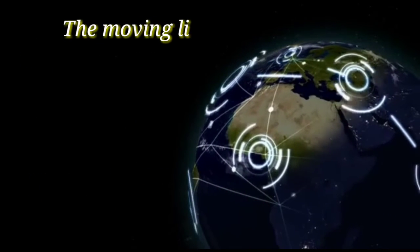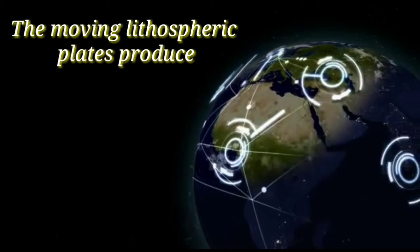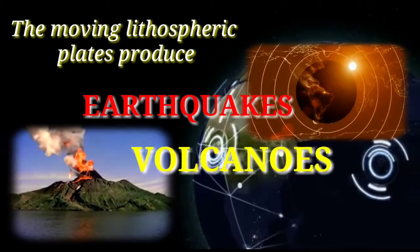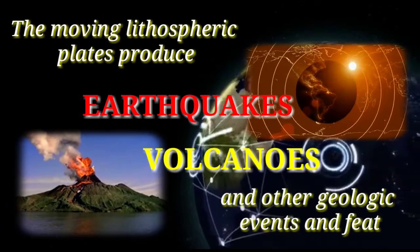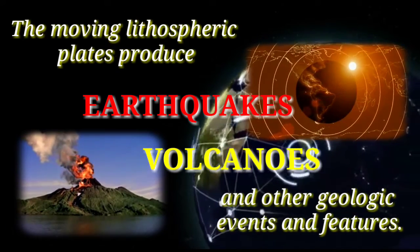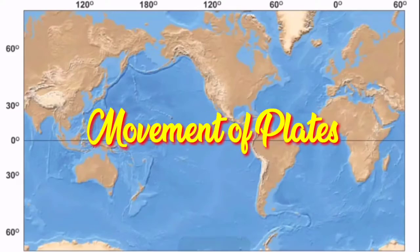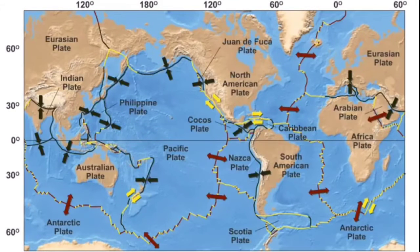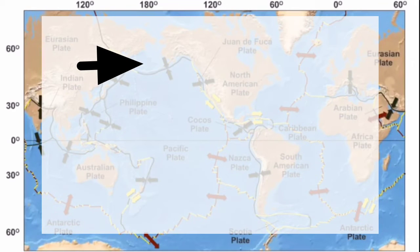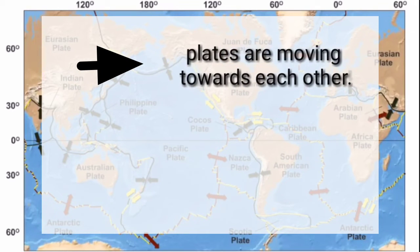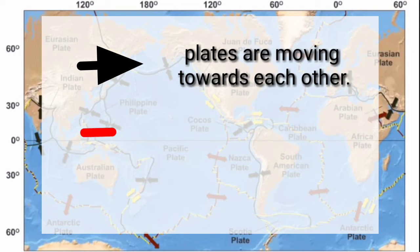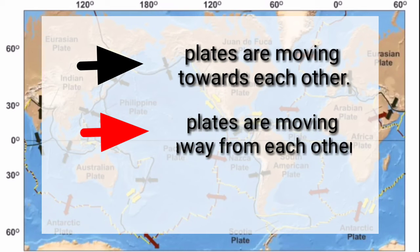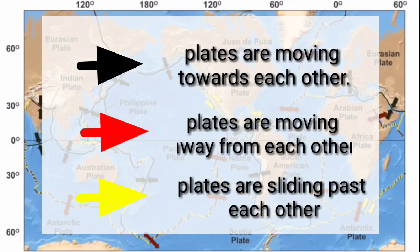The moving lithospheric plates produce earthquakes, volcanoes, and other geologic events and features. When plate tectonics occur, these plates move in various ways as you can see in the map. The arrows show the direction of movement of plates. Black arrows indicate that plates are moving towards each other, red indicates plates moving away from each other, and yellow indicates plates sliding past each other.